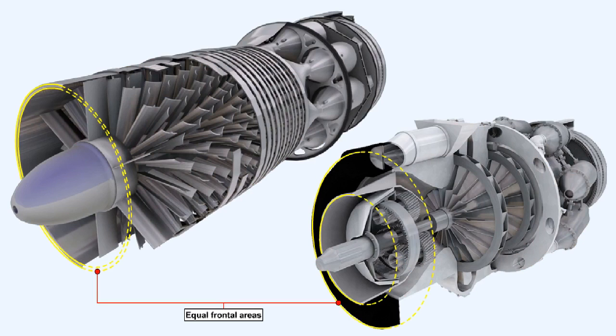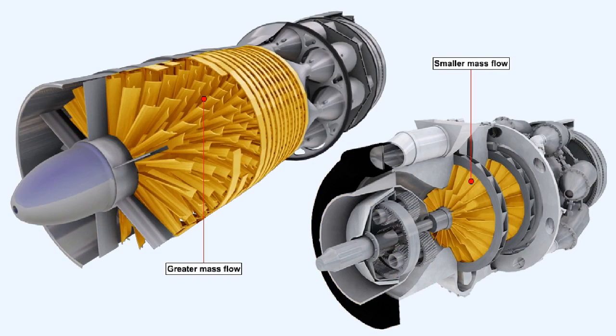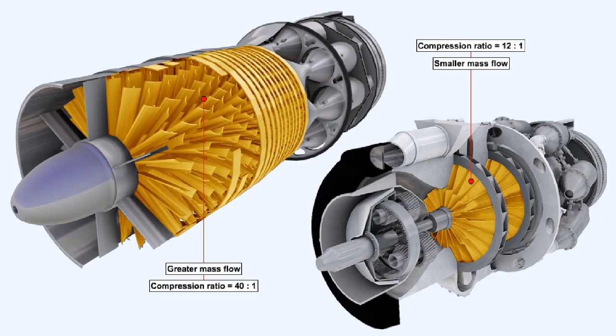If we compare two compressors, one centrifugal and the other axial, each having the same frontal cross-sectional area, we would first of all find that the axial flow compressor can take in a far greater mass of air than the centrifugal compressor. And secondly, that much higher compression ratios can be attained in the axial flow compressor.